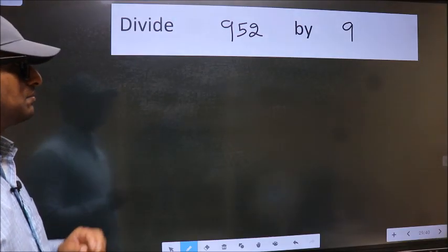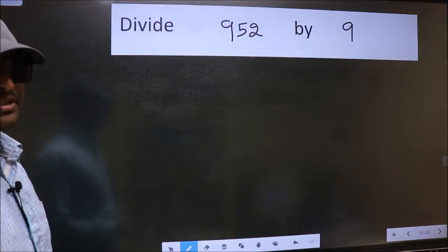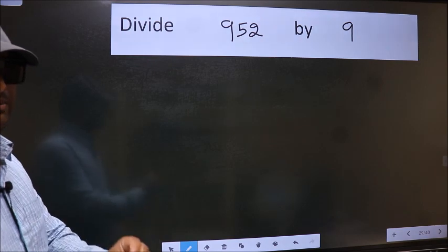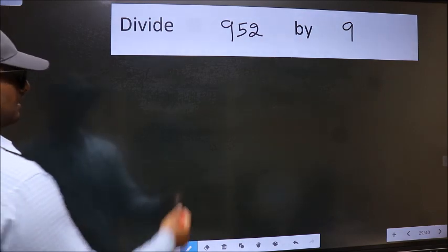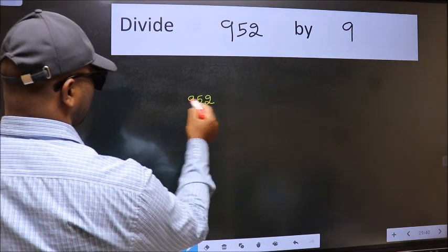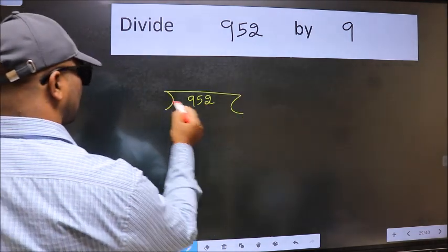Divide 952 by 9. To do this division, we should frame it in this way. 952 here and 9 here.